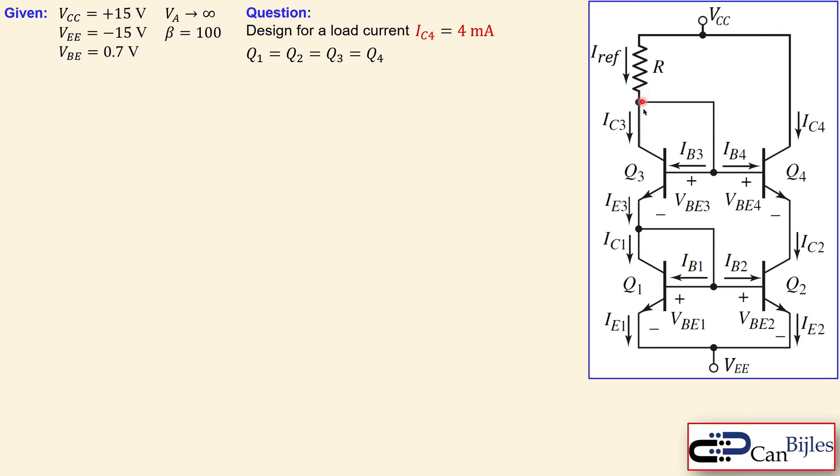What we'd like to know is the result for the resistor in order to have a design for a load current of IC4, which is 4 milliamps. What is given: we know that Q1, Q2, Q3, and Q4, so all these NPN BJTs are matched, they have an early voltage of infinite, the beta is 100, VCC and VEE are given, and the VBE for each of them is assumed to be 0.7 volts.